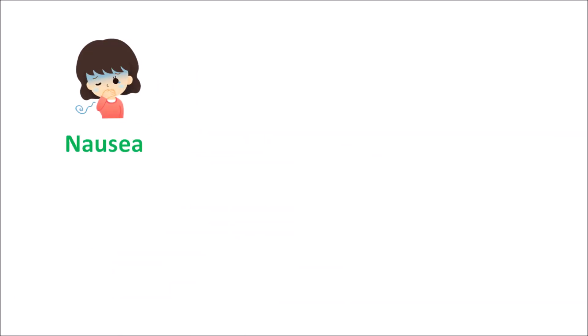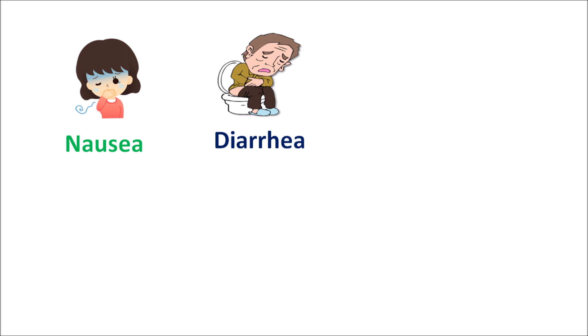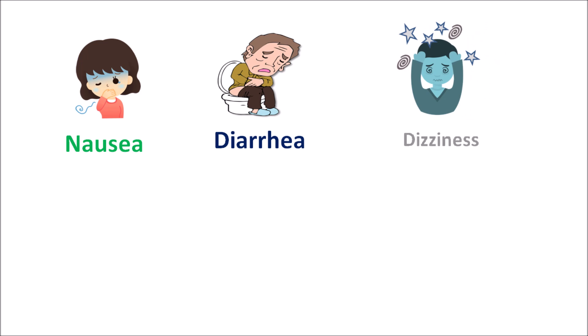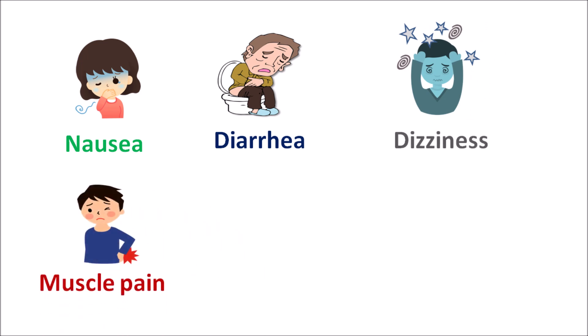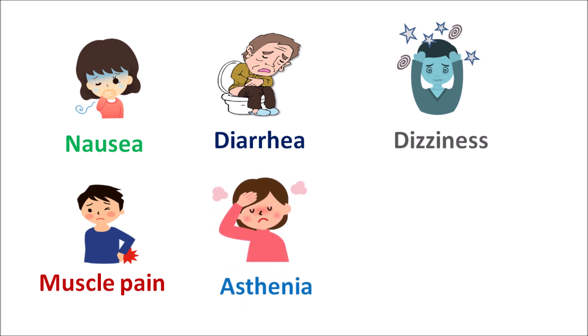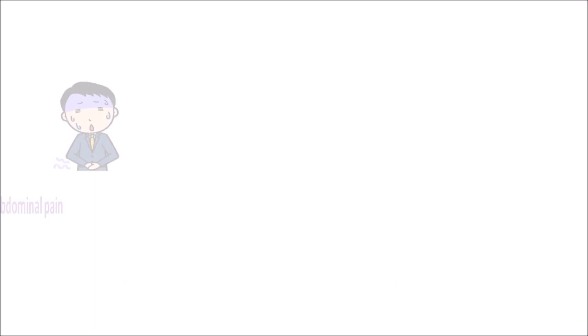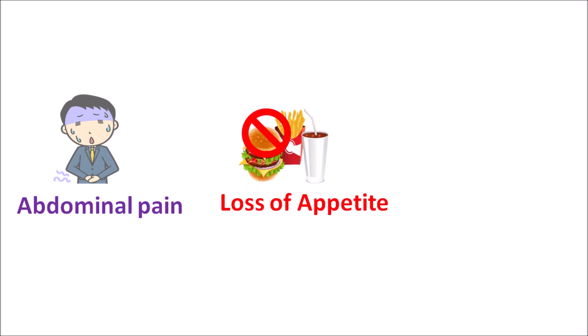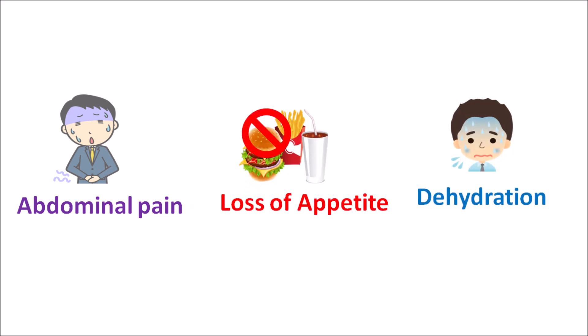Now let us see the side effects of this drug. Important side effects mainly include nausea and vomiting, diarrhea, constipation, and abdominal pain. Dizziness is another important side effect. It can also produce muscle pain, muscle cramps, asthenia (lack of energy), and can increase the risk of seizures by reducing the threshold potential. Other side effects include loss of appetite and dehydration.